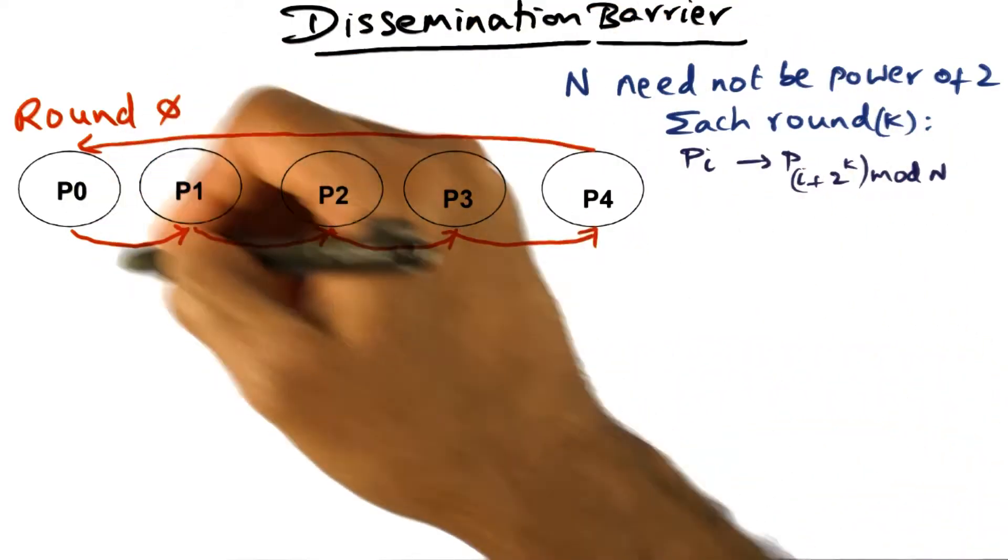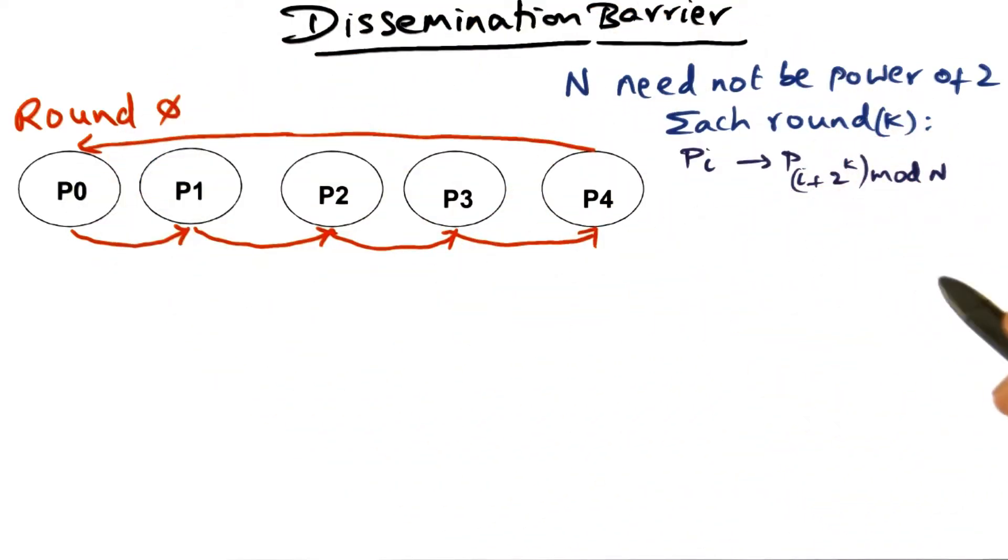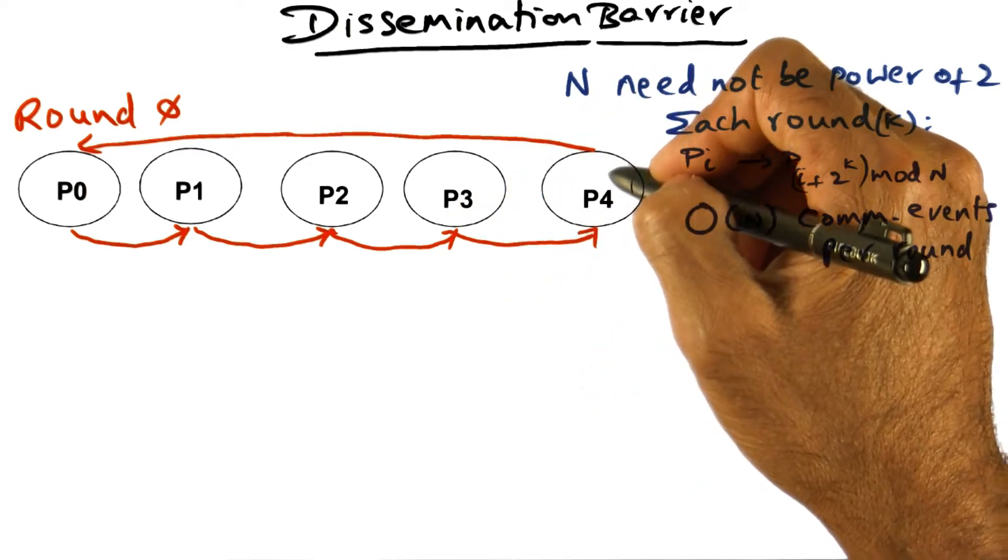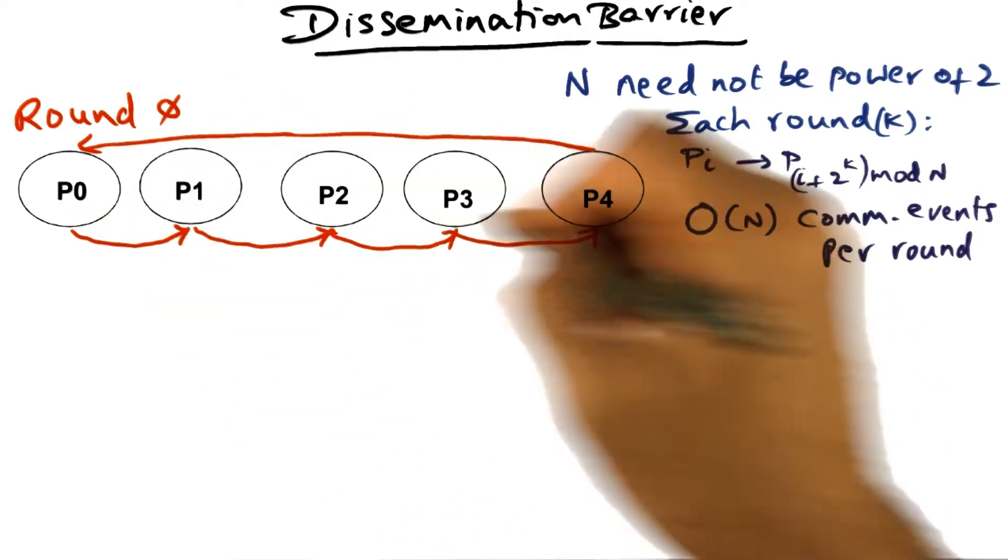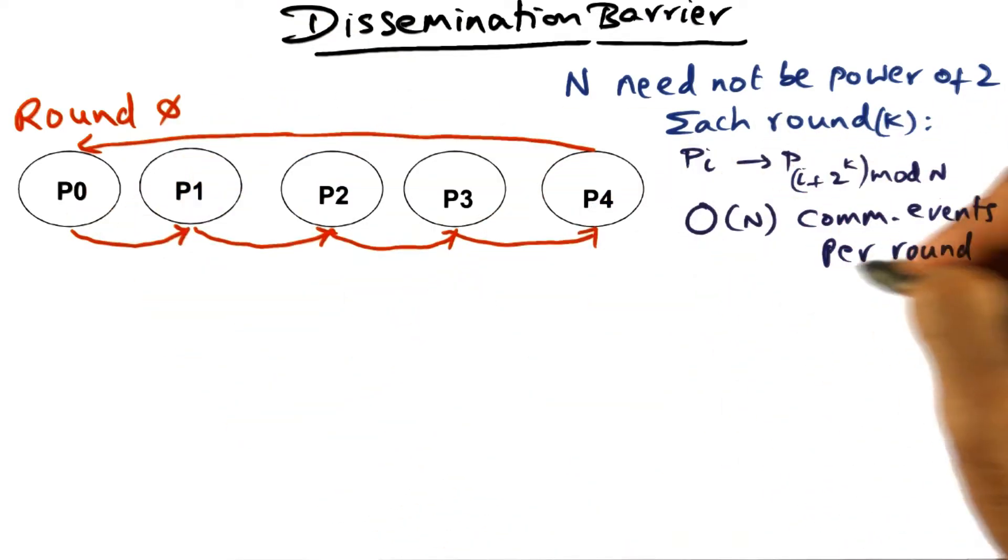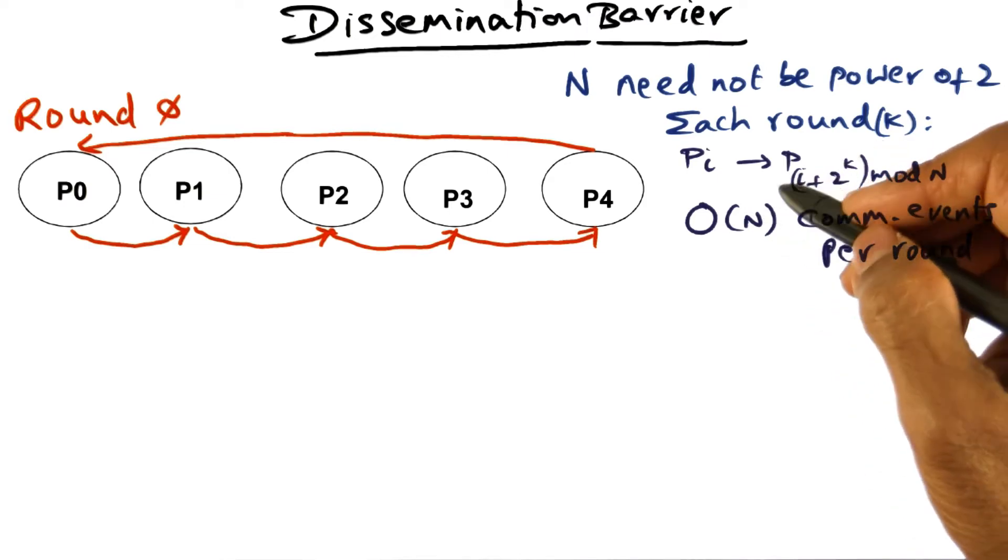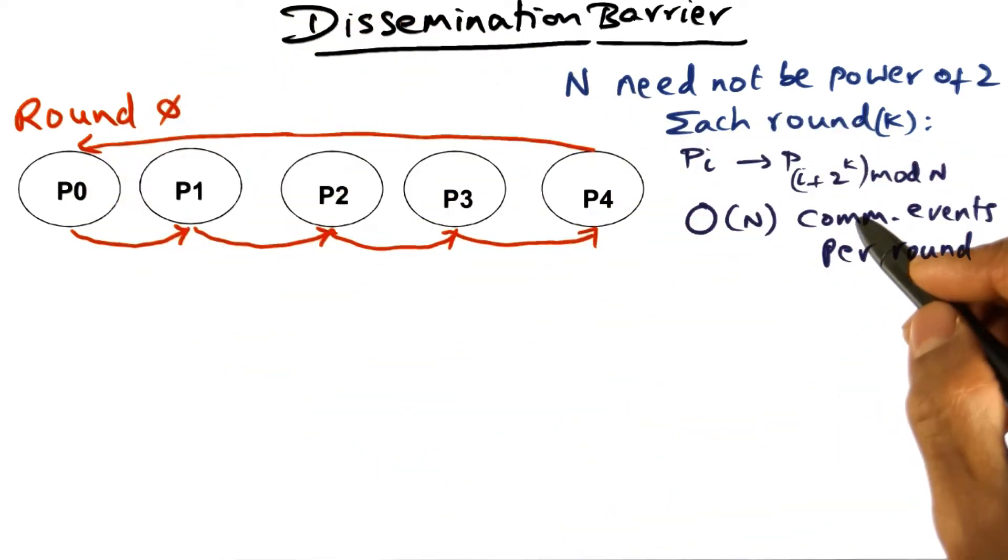Now how many communication events are happening in every round? Well, it's order of n communication events per every round because every processor is sending a message to another processor in every round. And therefore, the amount of communication that's happening is order of n, where n is the number of processors that are participating in this barrier.